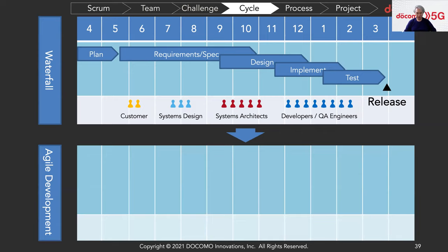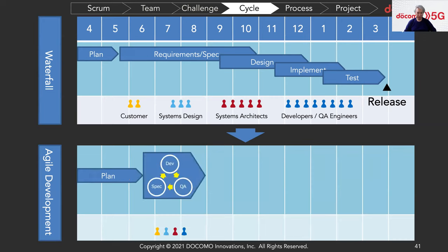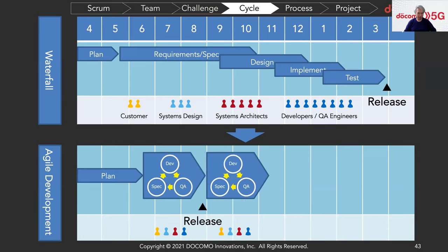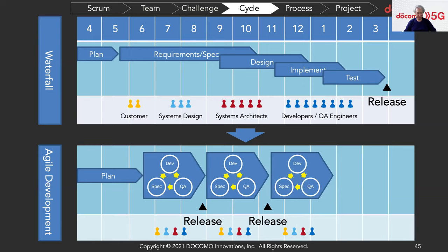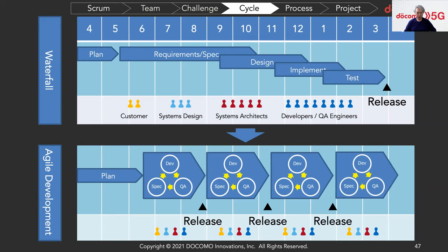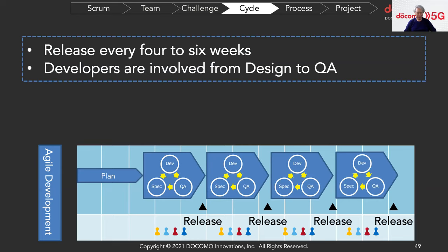So we quit the waterfall model and adopted an agile development process. First, we plan the project. Then we build a team to design, develop, and test the software in a short period, keeping the same team members. After a couple of months, we release the software even if it is not fully complete. The advantage is that we can get feedback from customers or stakeholders even from an incomplete release. We go through the same process again and release — repeating this cycle so we can release software every four to six weeks.